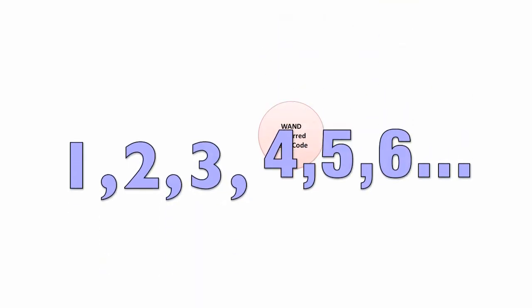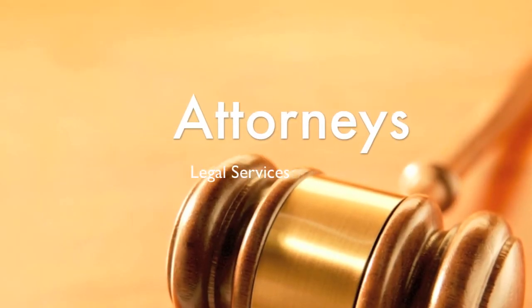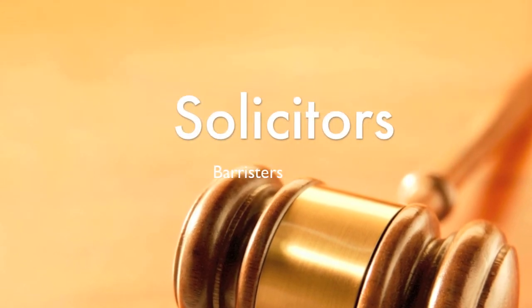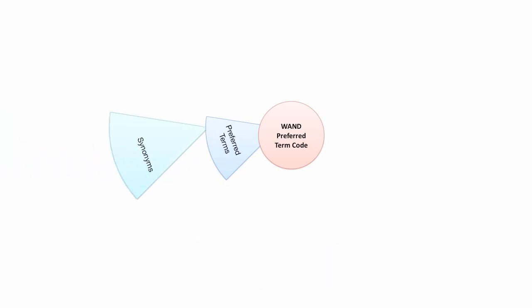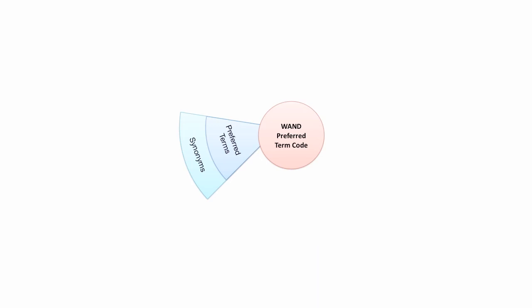Let's start with an overview of the WAND taxonomy. The base of the WAND taxonomy is the WAND preferred code — it's just a number: one, two, three, four, five, six. We then think of a concept: attorneys, legal services, law office, solicitors, barristers — these words all mean the same thing. From those words we select one, 'attorneys,' to be our preferred term, and then associate synonyms to that term, starting to build a thesaurus.